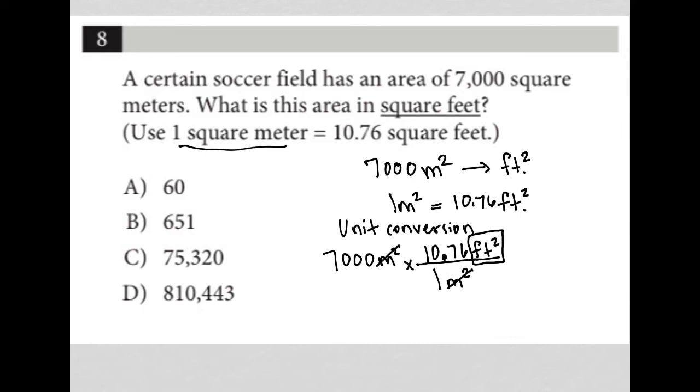All that's left to do now is go to your calculator and figure out, well, what is 7,000 times 10.76? And what I'm getting here is that that is equal to 75,320. And again, of course, the unit is feet squared. So 75,320 is the correct answer, and that is choice C.